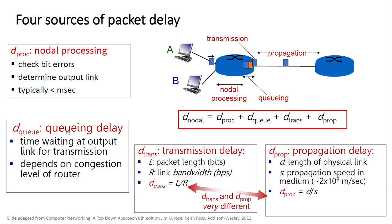The second source is queueing delay — the time waiting at the output link for transmission. It depends on the congestion level of the router, i.e., how fast you're receiving data and how fast you can transmit it. If incoming rate exceeds outgoing rate, packets must wait, giving us queueing delay d_q.